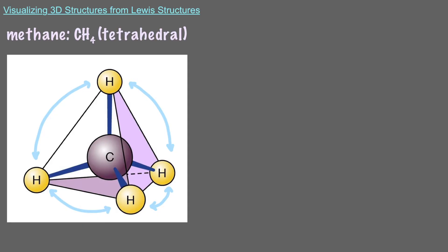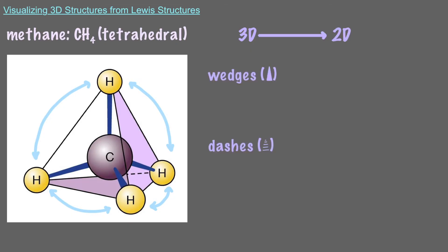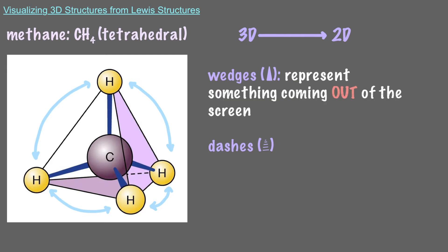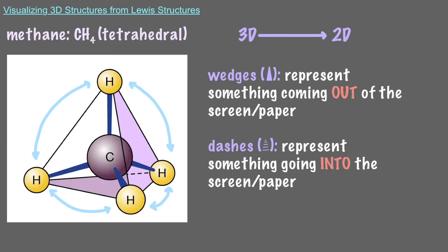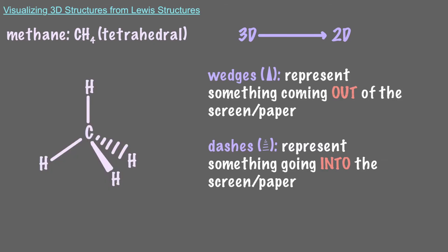We want to represent this with a Lewis structure. That's a little more challenging since our paper, or in this case our screen, only has two dimensions. We have to come up with a way to represent 3D structures in a 2D drawing. To do that, we use wedges and dashes. A wedge represents something coming out of your screen or piece of paper, and a dash represents something going into the screen. Using the wedges and dashes method, this is what the 3D structure of methane looks like.